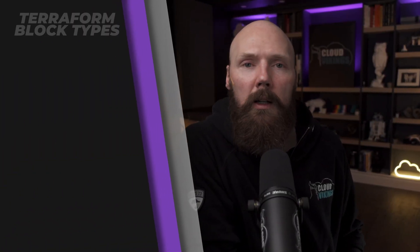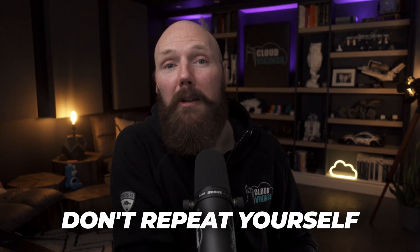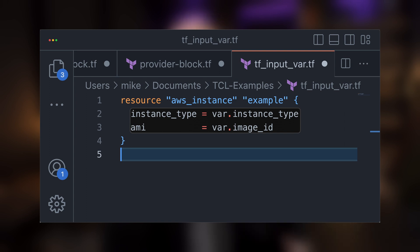Next is the input variable block. Terraform has a few ways to use named values to define resources and capture output data. Input variables work as parameters we can use in our Terraform modules to define different values or behaviors — following the don't repeat yourself principle. For example, if we need hundreds of EC2 instances, we don't need hundreds of different modules. We can use the same module repeatedly with different input values to tune the behavior and parameters for each EC2 resource.